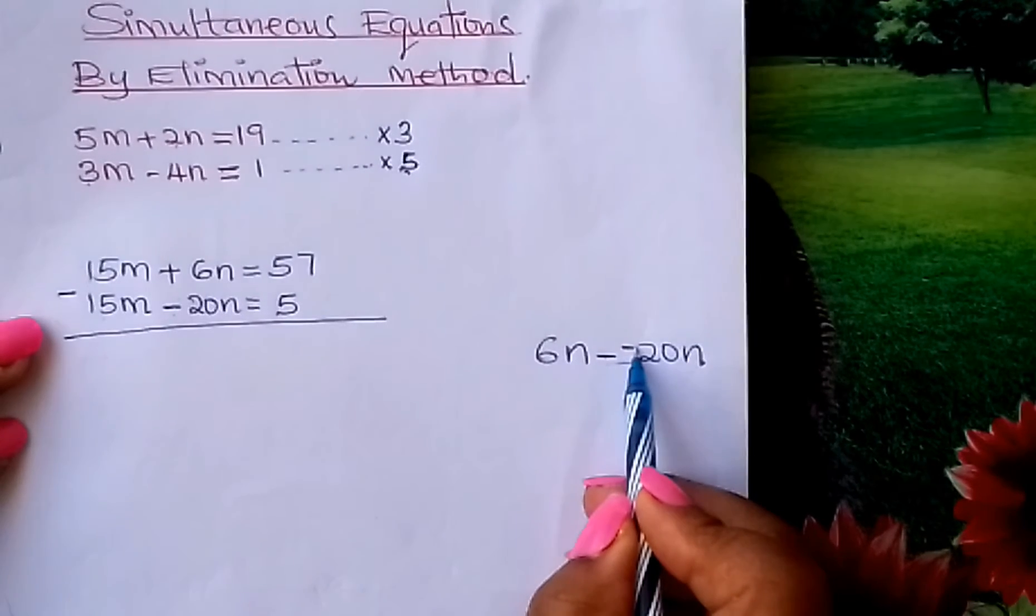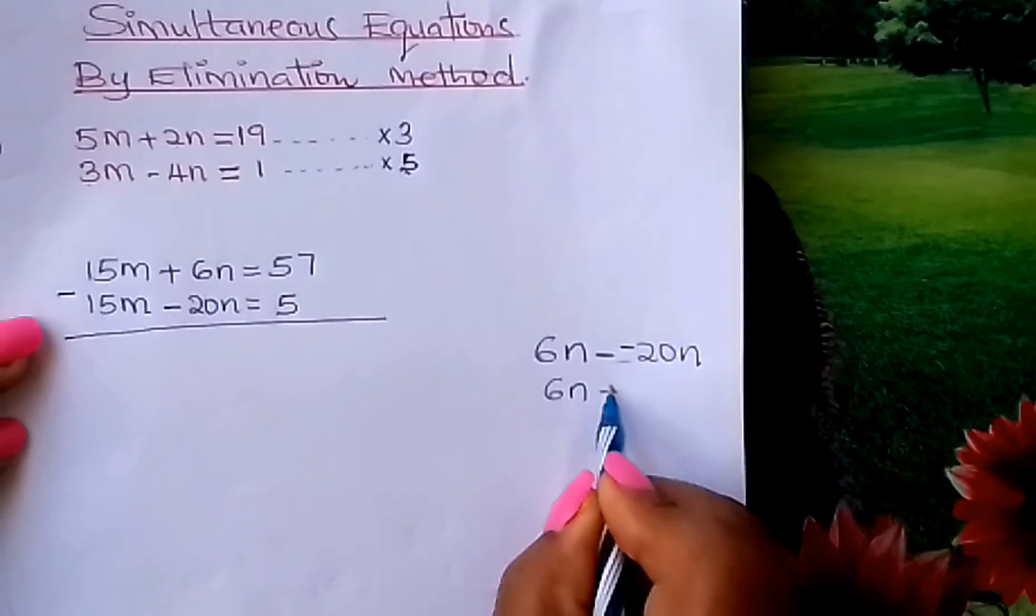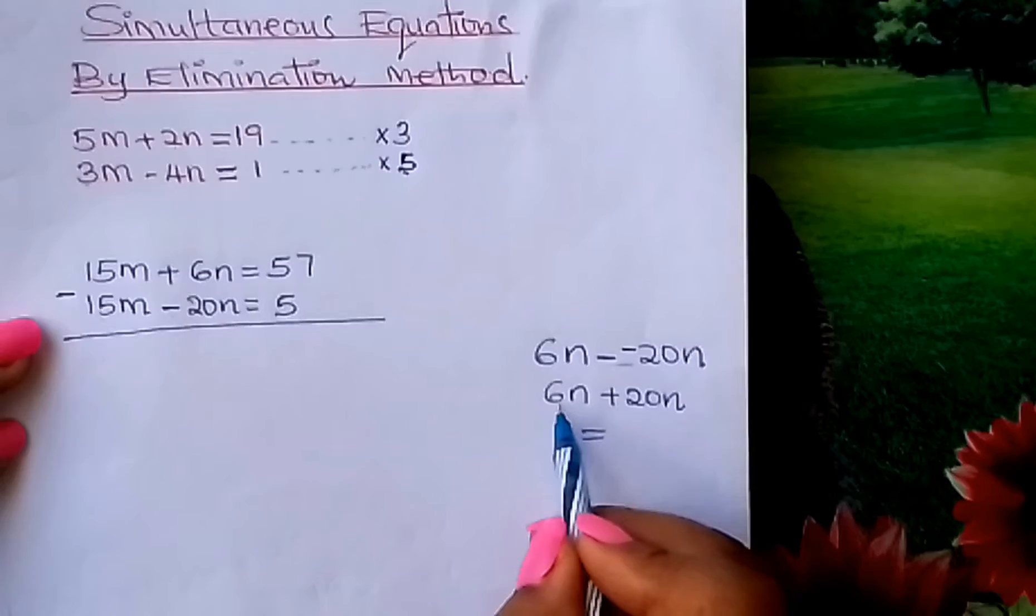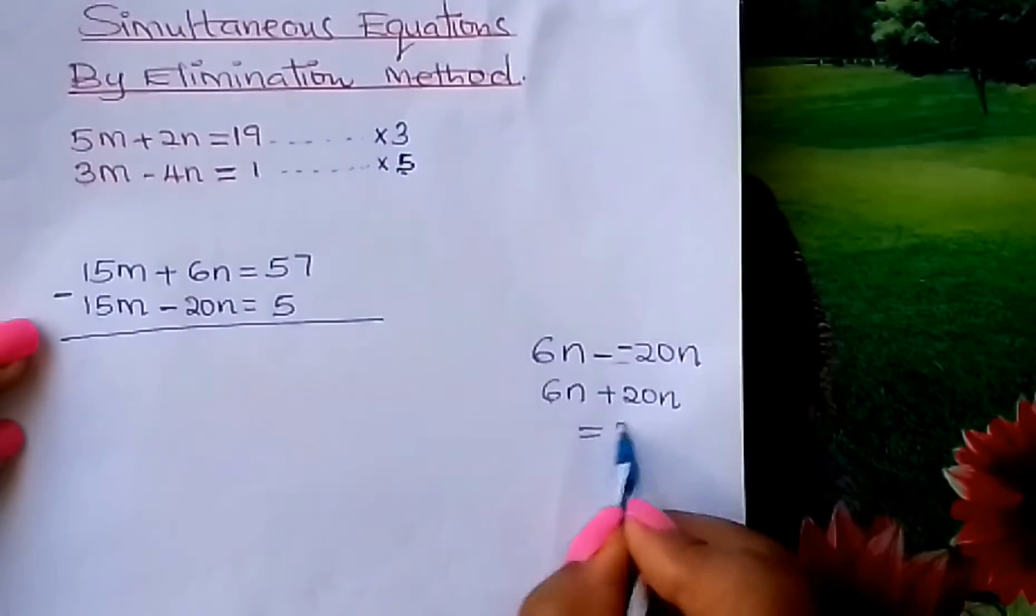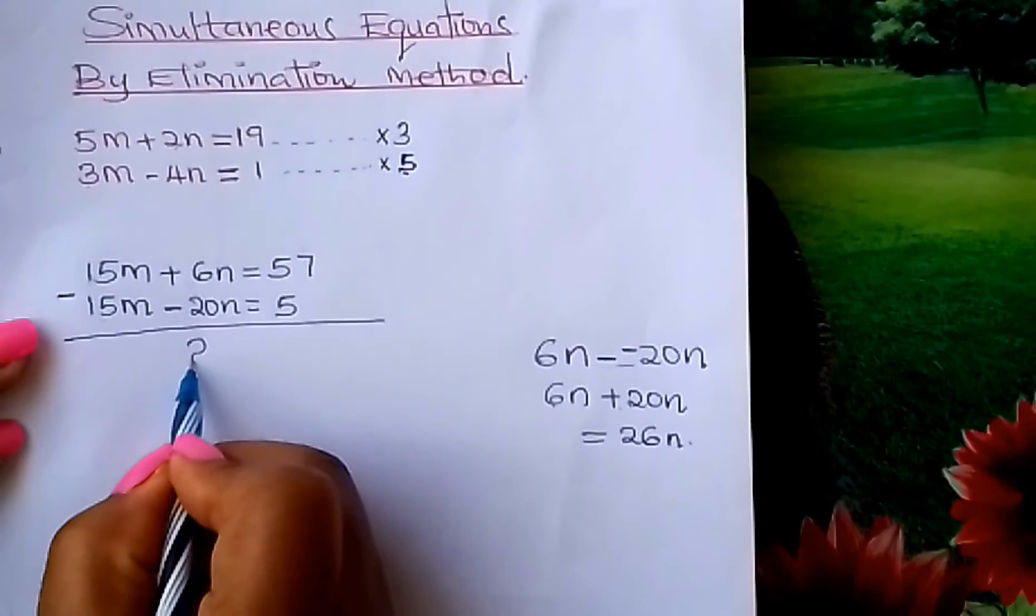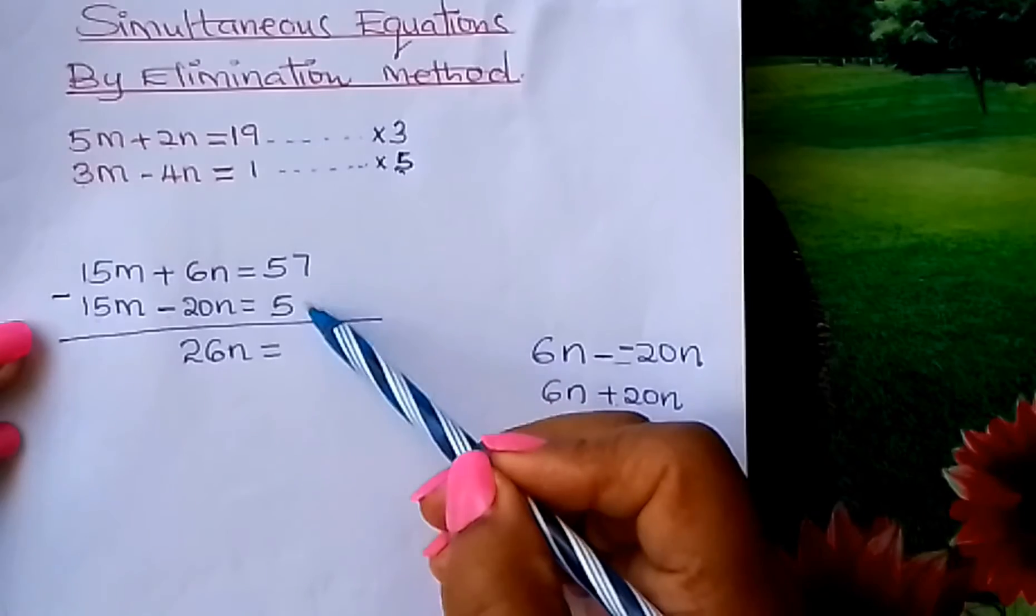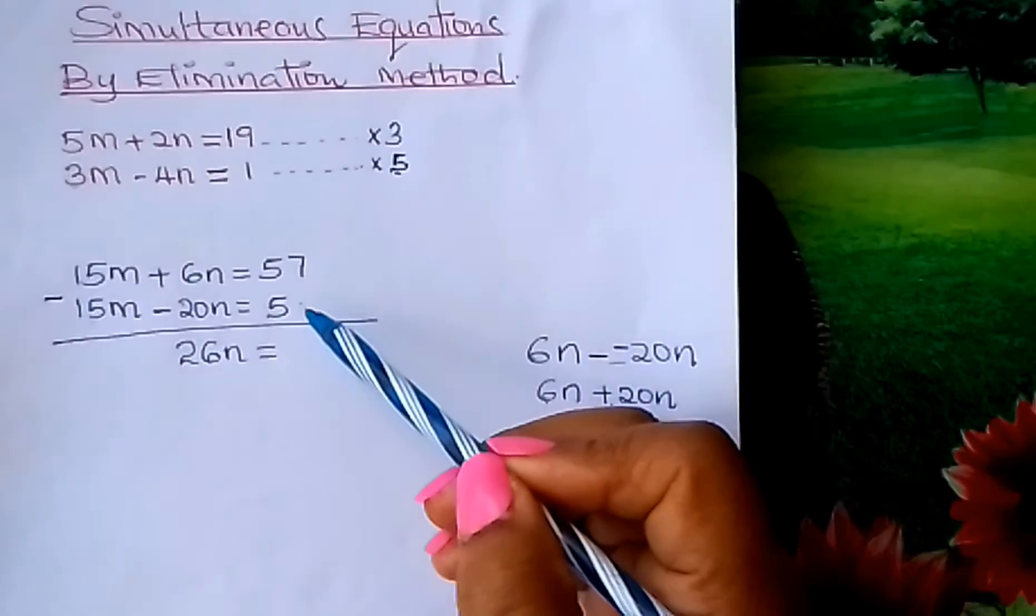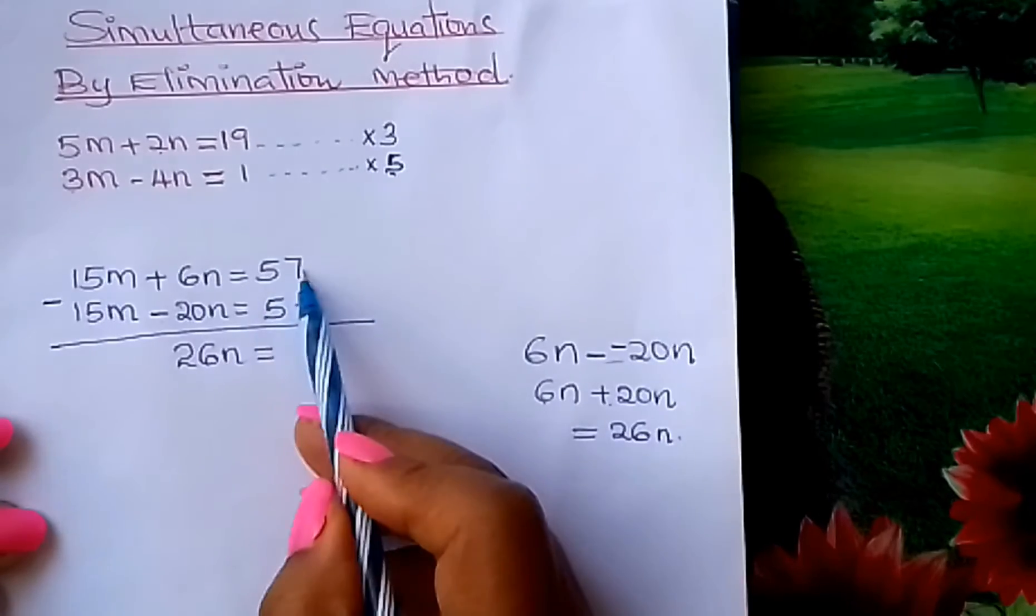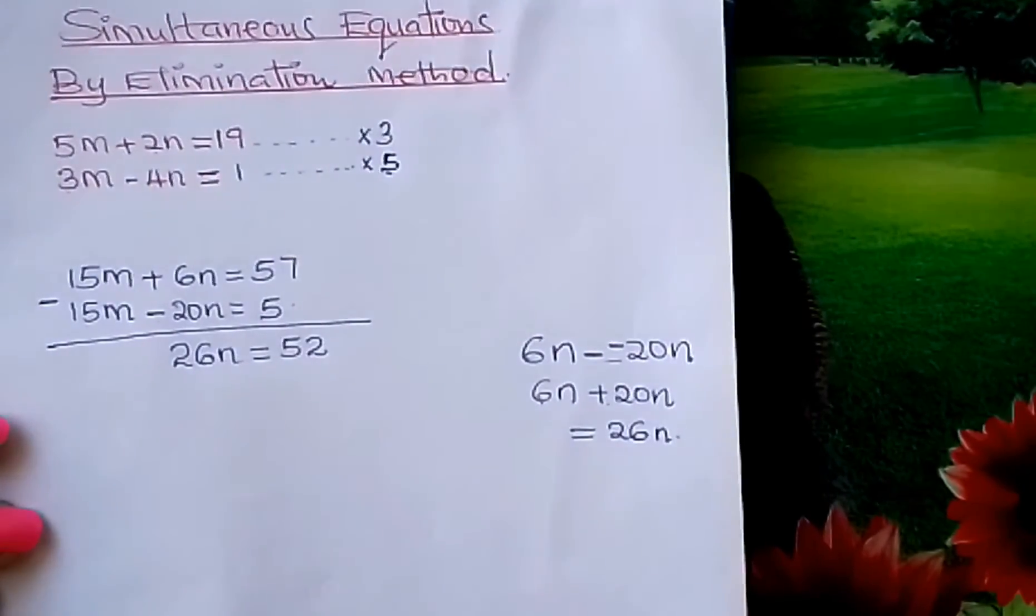Minus followed by minus gives us plus. So this gives us 6N plus 20N which gives us 26N. You come and write it here: 26N. Is equals to what? Go to this other end and subtract: 57 minus 5 gives us 52.